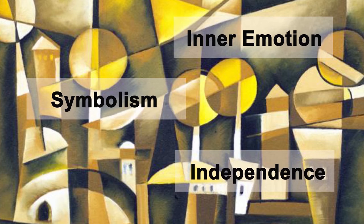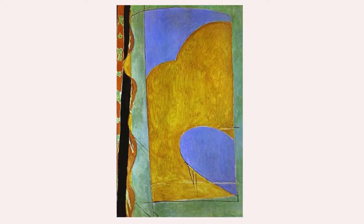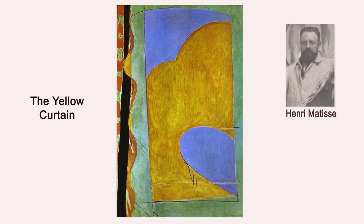For example, let's take the famous painting 'The Yellow Curtain' by Henri Matisse, painted in 1914. In this painting, the artist paints what he sees through his window frame. It shows the curls of the curtain on its left side.